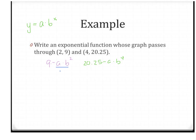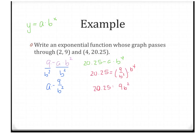Let's solve the first equation for a by dividing by b², giving a = 9/b². Taking that to the other equation: 20.25 = (9/b²)·b⁴. Using the exponent rule and subtracting exponents, that simplifies to 20.25 = 9b². Dividing by 9, we get b² = 2.25.